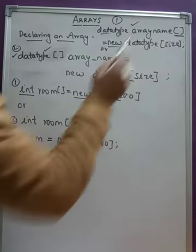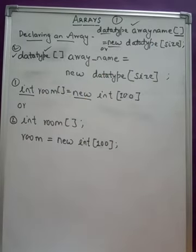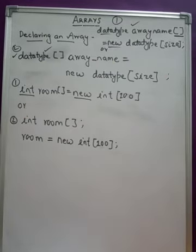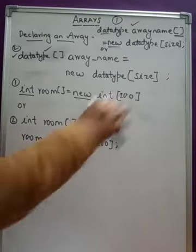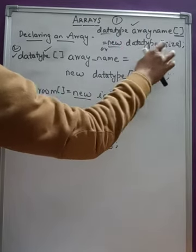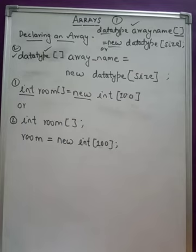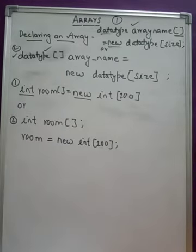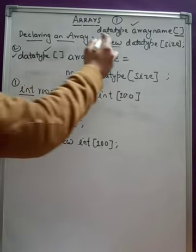After the array name, it is followed by square brackets. Then you write equals new, followed by the data type again, and then the size of the array in brackets. This size defines the number of values you can store in that array.